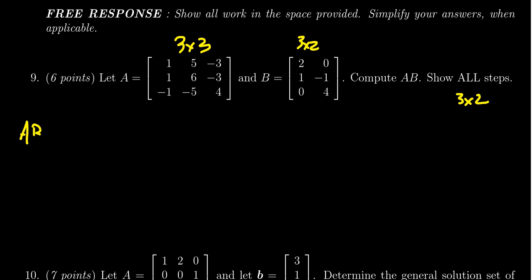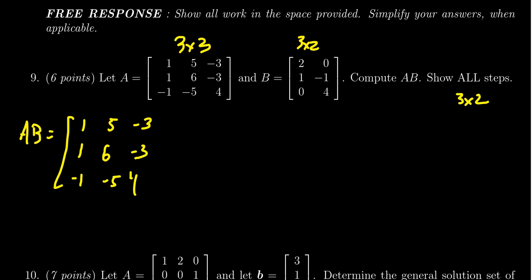To compute A times B we're going to show all the steps. We copy down A: one, five, negative three, one, six, negative three, negative one, negative five, four. We write down B next: two, zero, one, negative one, zero, and four.